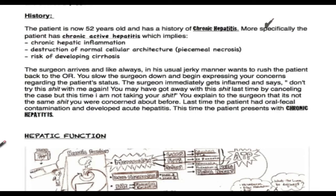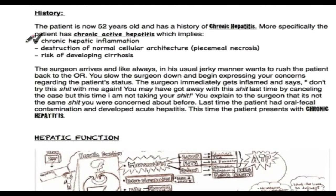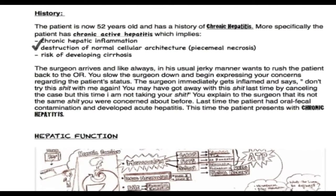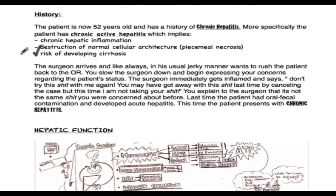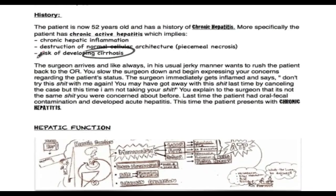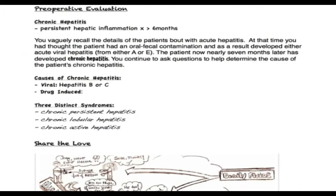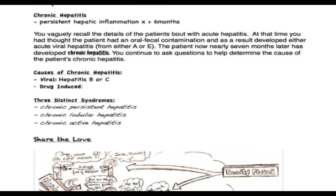More specifically, the patient has chronic active hepatitis, which implies chronic hepatic inflammation, destruction of normal cellular architecture, and a risk of developing cirrhosis. By definition, chronic hepatitis is thought to be persistent hepatic inflammation for greater than six months.